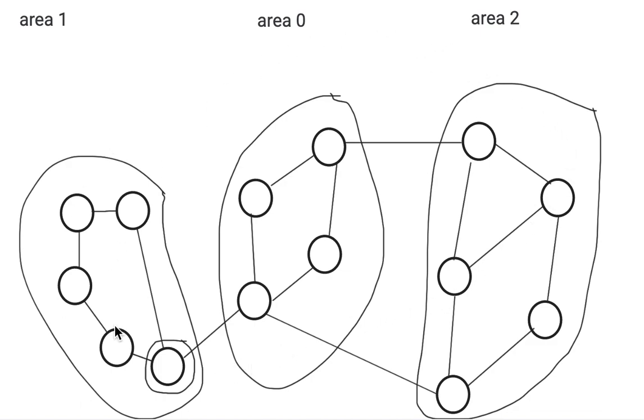So we have this network system where we have three different areas: area 1, area 0, and area 2.